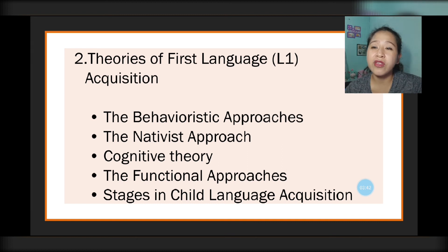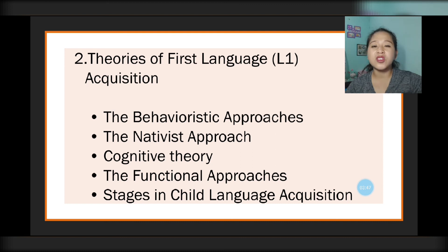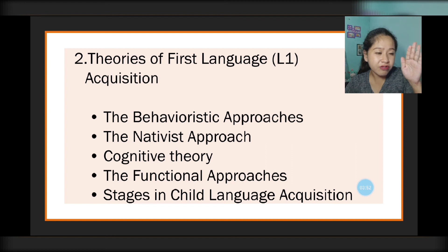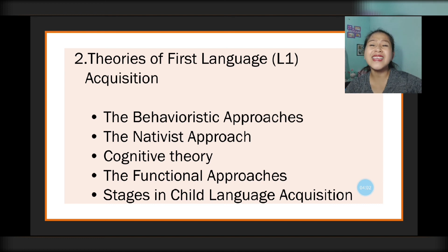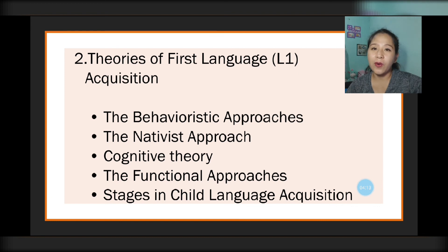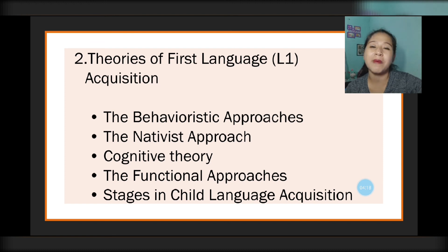For the next topics, we're going to cover the different theories of first language acquisition, and your role is to categorize whether each theory belongs to the nature or nurture side of the debate. We'll cover the behavioristic approaches, the nativist approach, cognitive theory, functional approaches, and the stages in child language acquisition. For other queries, just comment down below. Thank you for watching, goodbye and have a nice day.